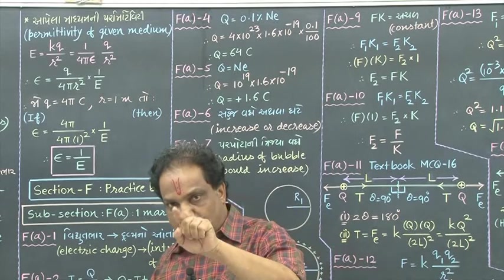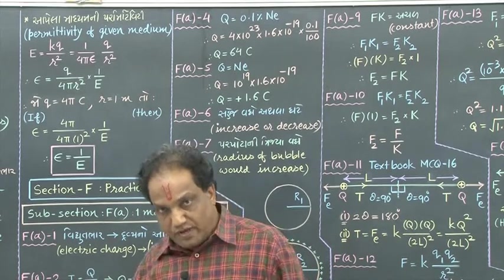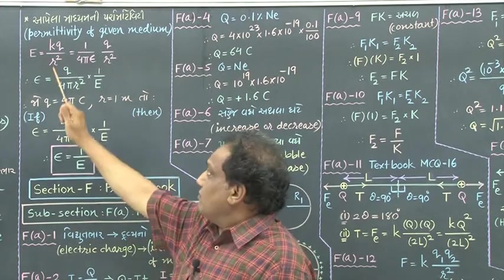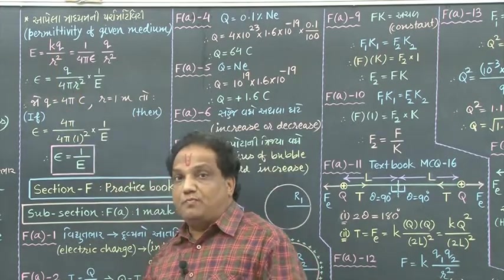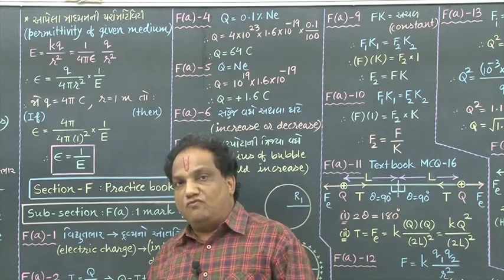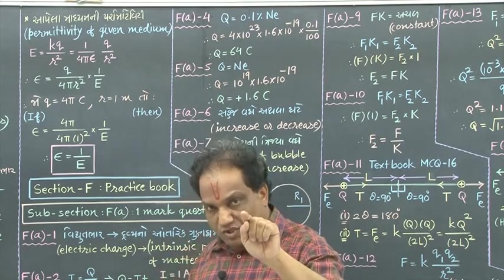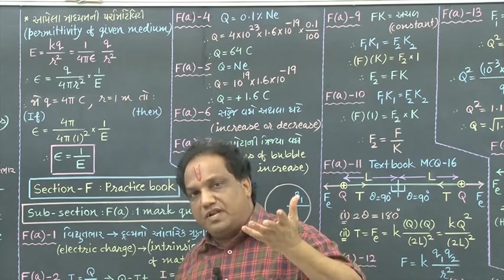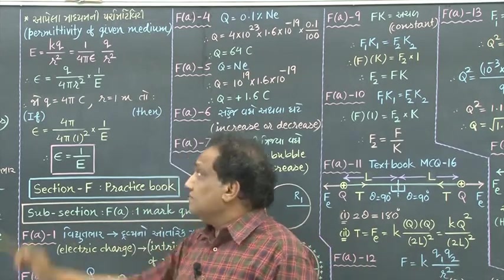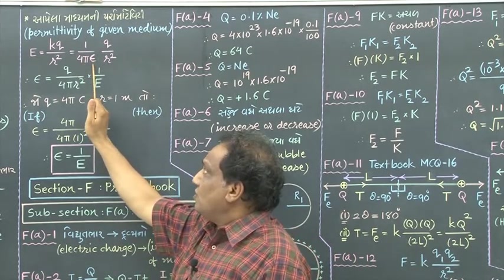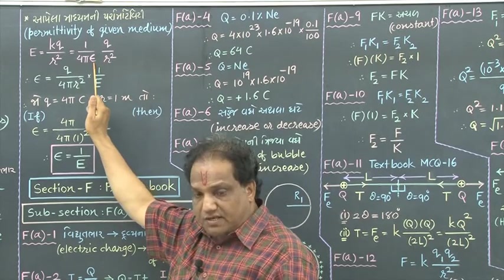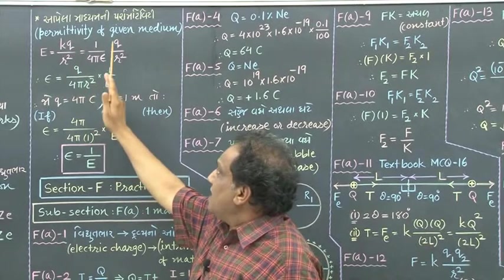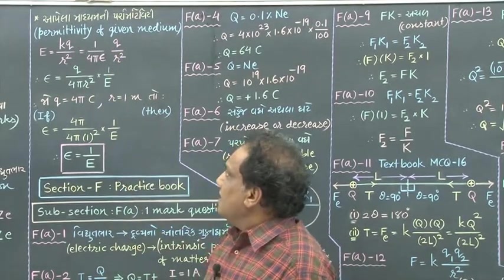Just recall the formula for the magnitude of electric field produced by a point charge. It was E equals KQ upon R squared — K into charge upon distance squared. Now, what is small k? It was the proportionality constant coming in Coulomb's law. For vacuum we had written in place of small k the quantity 1 upon 4 pi epsilon-zero. But for another medium, you can write 1 upon 4 pi epsilon, where epsilon is the permittivity of a given medium.